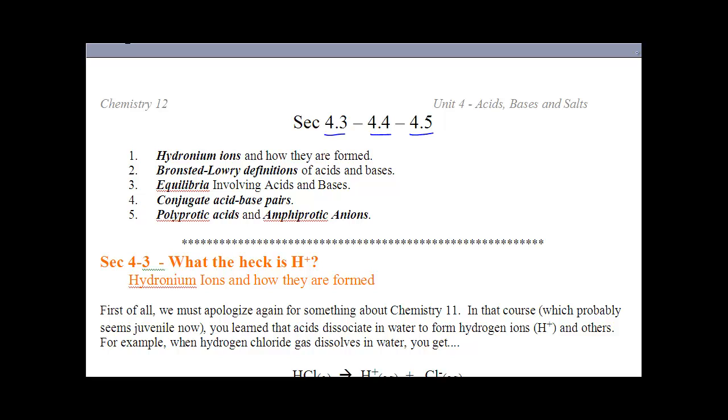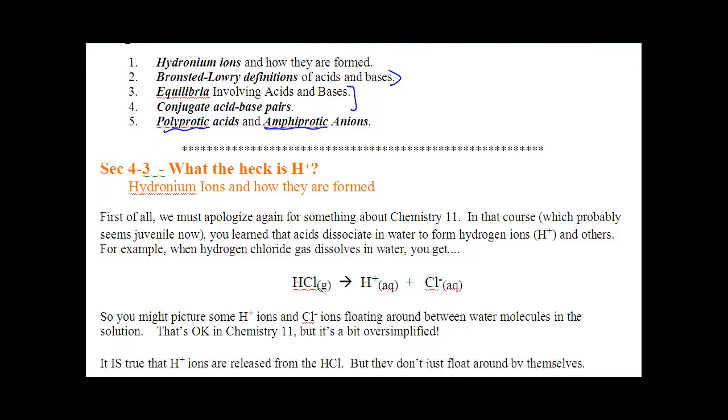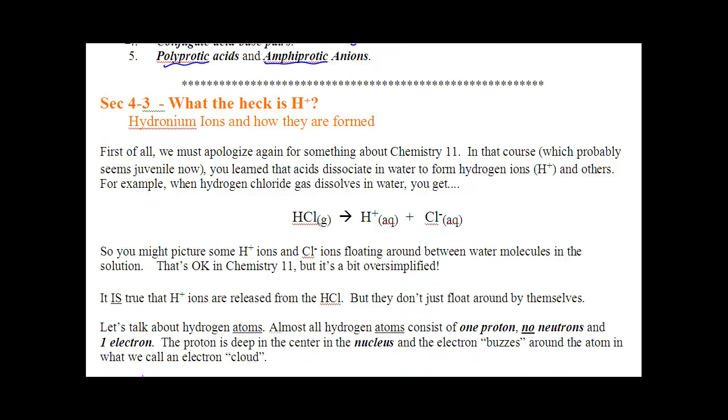We're going to start talking about exactly what is an acid. We're going to look at the proper definitions that we use today. We're going to work that into equilibrium and something called a conjugate pair, and then quickly define a couple of words. First thing, what we have to do is explain exactly what an acid is.